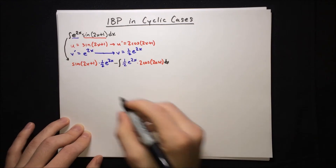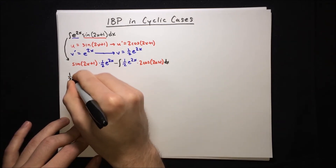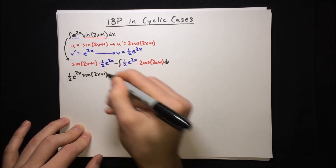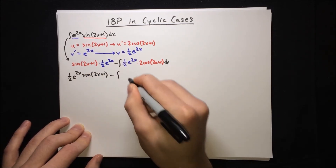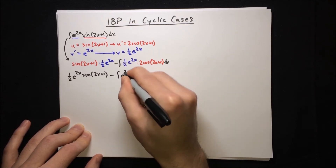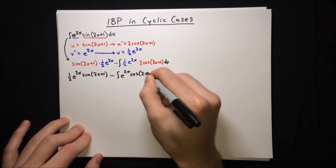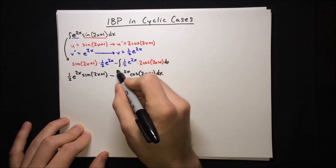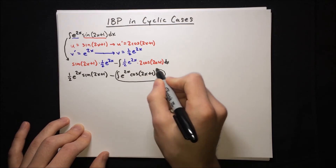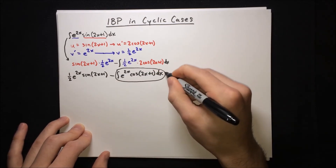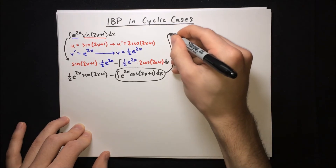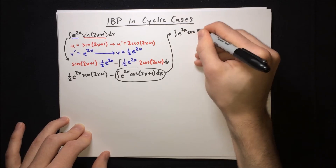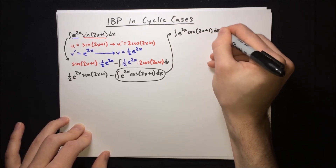Simplifying, we get half e to the 2x times sine(2x + 1) minus the integral of e to the 2x cos(2x + 1). We can resolve this remaining integral back into the form of the original using another round of integration by parts, so let's move that up here: the integral of e to the 2x cos(2x + 1) dx.